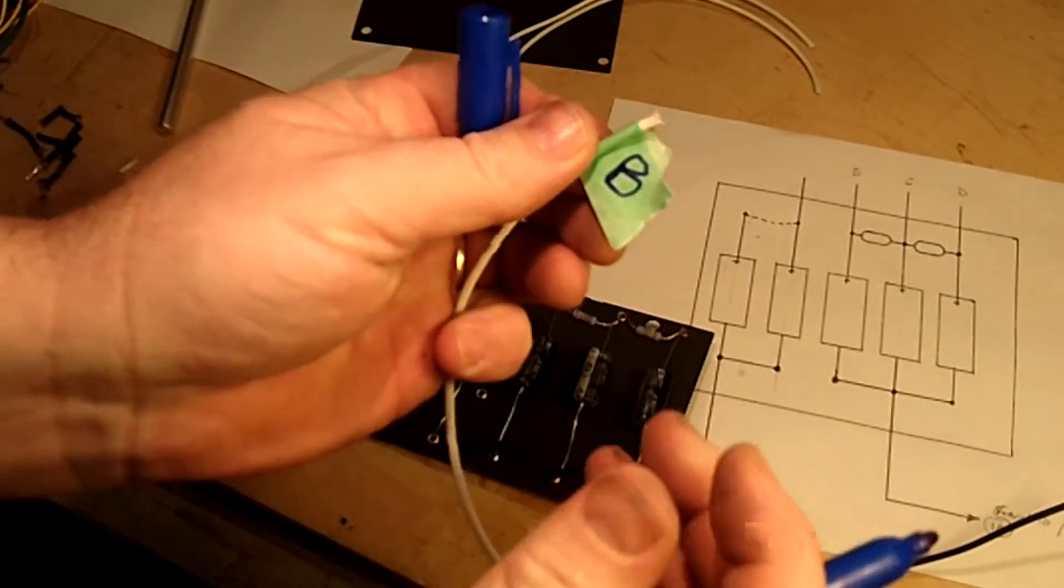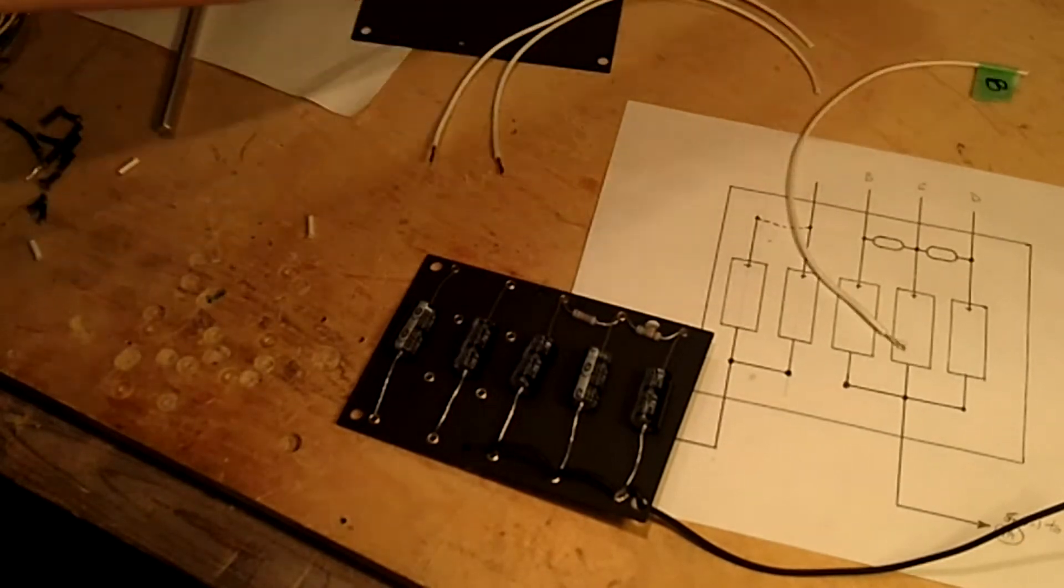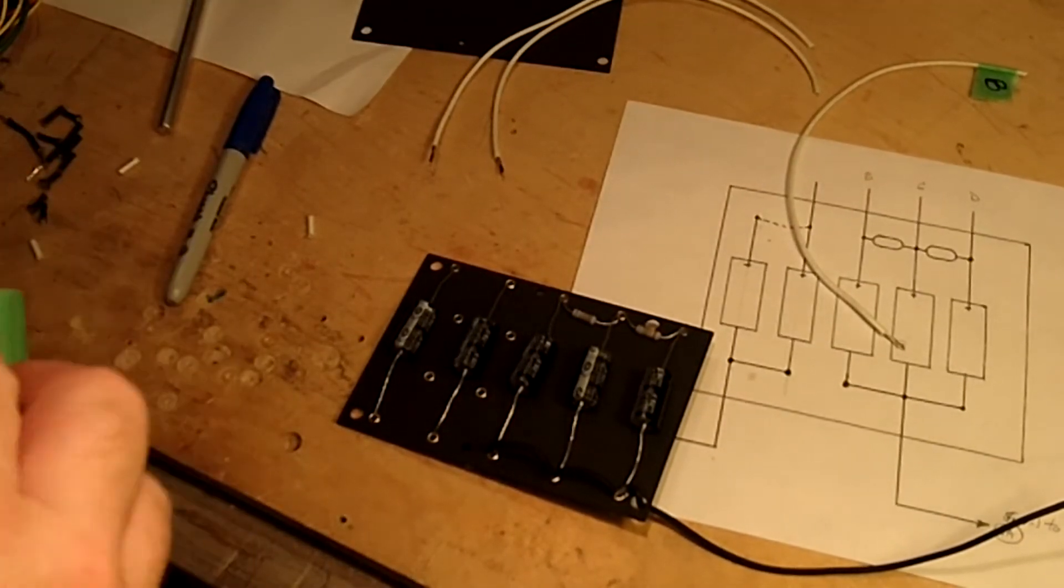And I just put the same ones that are on the schematics. Label them B, C and D just like you see there.